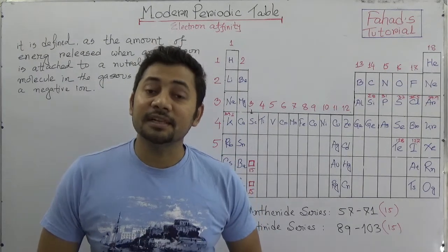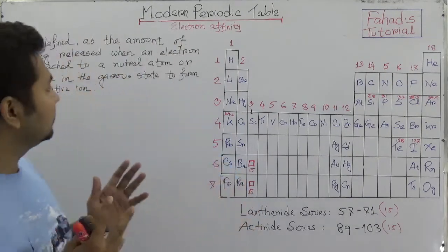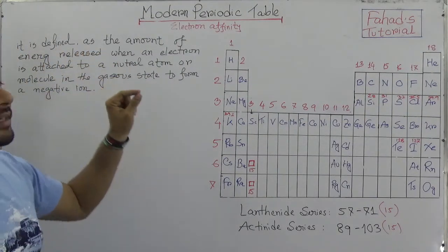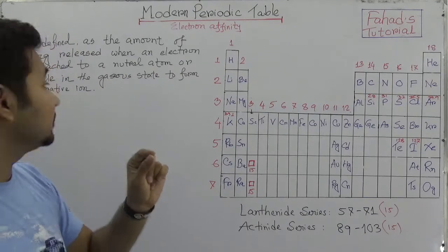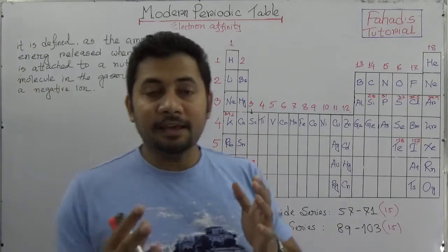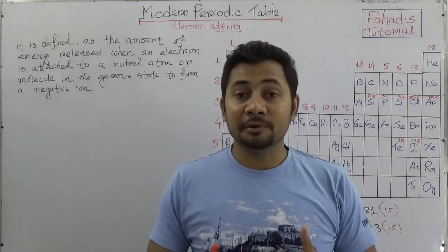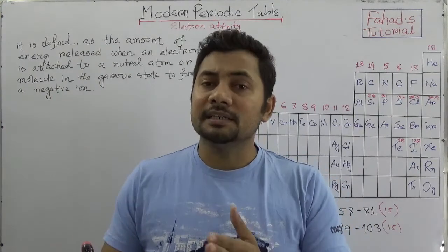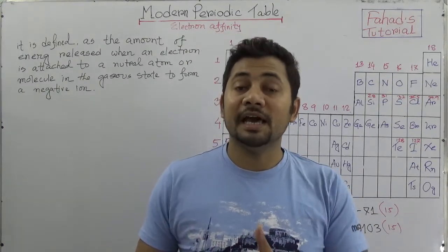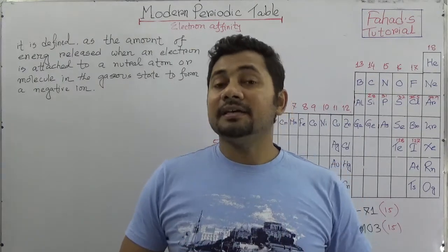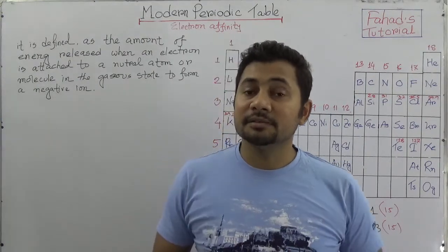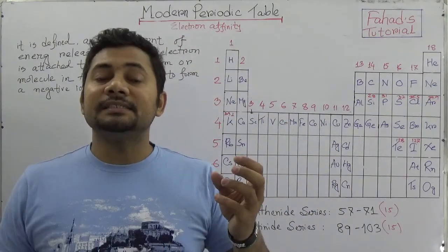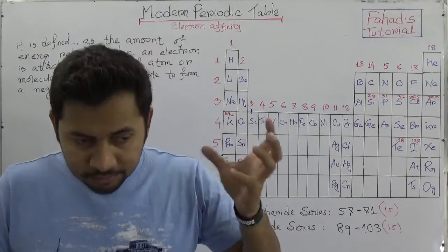Let's study about electron affinity. The definition of electron affinity is that it is defined as the amount of energy released. As we are studying about the periodic properties of elements, in the previous class we started about metallic properties, atomic radius, and ionization energy. This class is about electron affinity, which is a periodic property of an element.